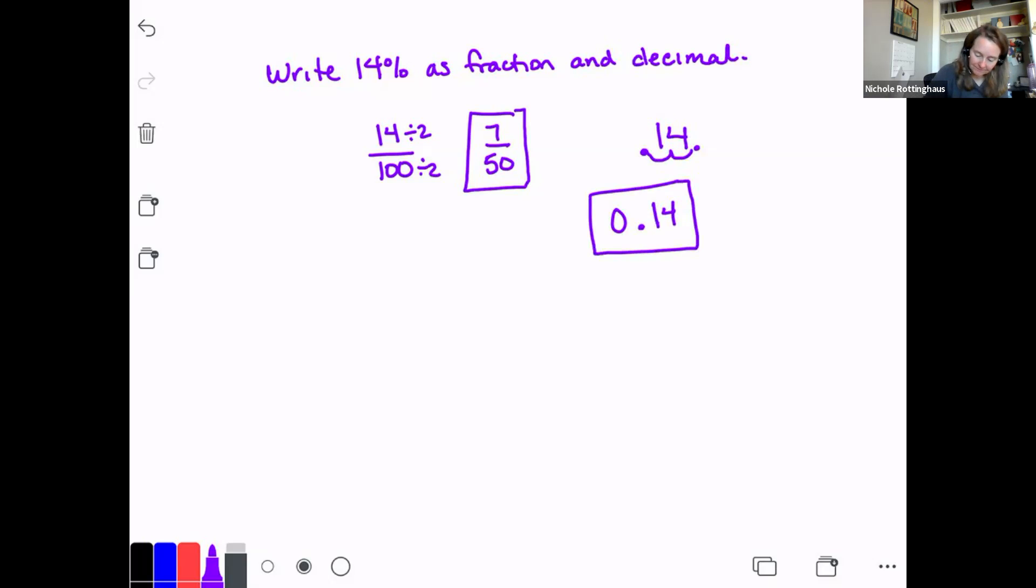All right. Number two was I gave you a number 1.225. And I said, write that as a fraction and as a percent. Okay, now to write it as a fraction. This is a number that's bigger than one, right? It's 1.225. So I have a whole.